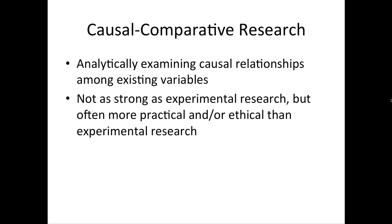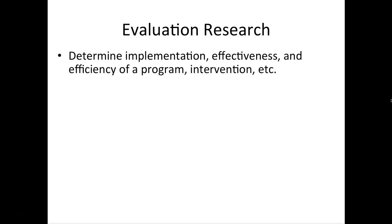There are certain things we can't manipulate — like gender or race and ethnicity — but we often want to know about the effects of those variables on our outcome variables. Causal comparative research is not as strong as experimental research in being able to make causal claims, but it's often more practical or more ethical than conducting experimental research. Since we can't manipulate gender or race and ethnicity, practically speaking, causal comparative research allows us to examine causal relationships in situations where we have not or cannot conduct an experiment.